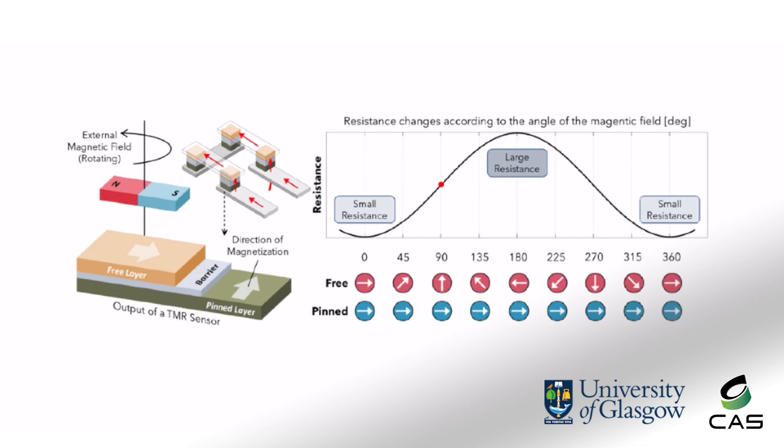The tunnel magneto-resistance effect is a nanoscale phenomenon in which, under the right conditions, electrons can tunnel through a very thin, ordinary insulated material. The figure shows a basic structure consisting of free layer, barrier, pinned layers and its transfer curve.